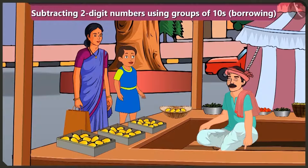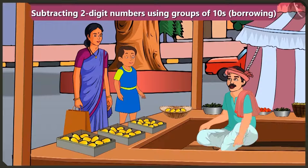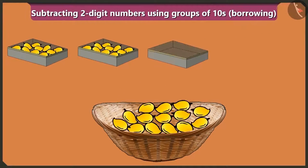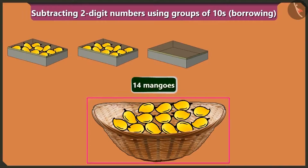Mummy, the mango seller has only four loose mangoes. So how will he give us eight mangoes? I will empty one box of ten mangoes into this basket. So look, now there are ten and four — fourteen mangoes in this basket.